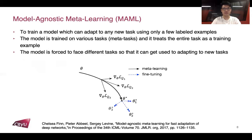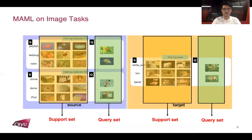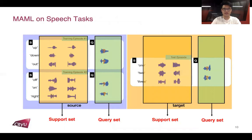MAML trains a model which can adapt to any new task using only a few labeled examples. The model is trained on various tasks, also known as meta-tasks or episodes, and treats the entire task as a training example. The model is forced to face different tasks so that it can get used to adapting to new tasks. MAML has been widely used in few-shot image classification, few-shot speech classification, and few-shot relation classification tasks in natural language processing.